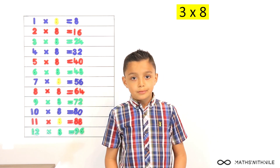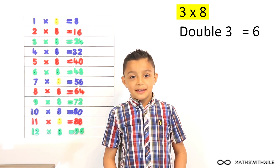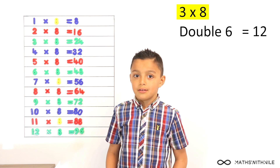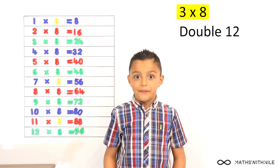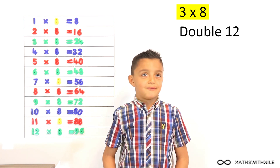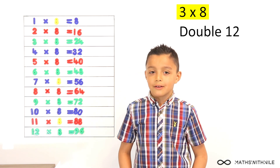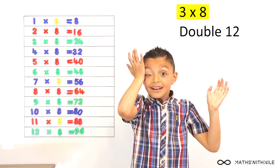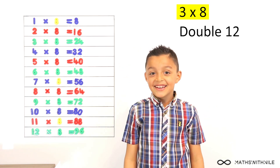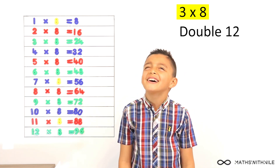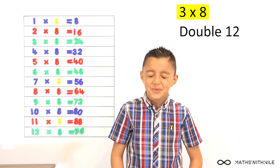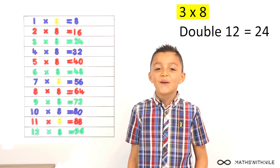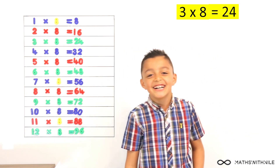Let's try 3 times 8. Double 3 is 6. Double it again — double 6 is 12. Double it again — double 12. That's 12 and 12. 22... 24. Oh my goodness. Maybe you should stay away from that method!